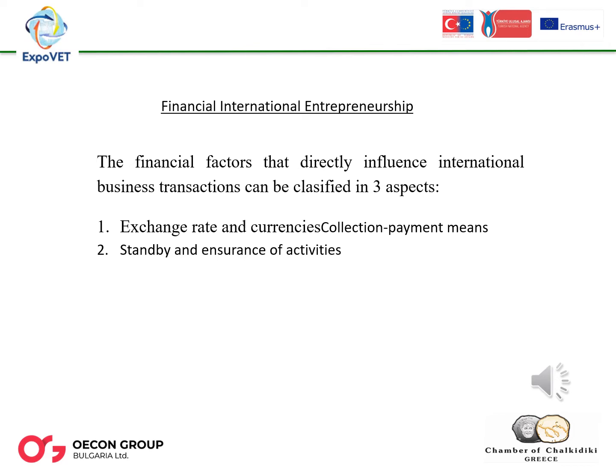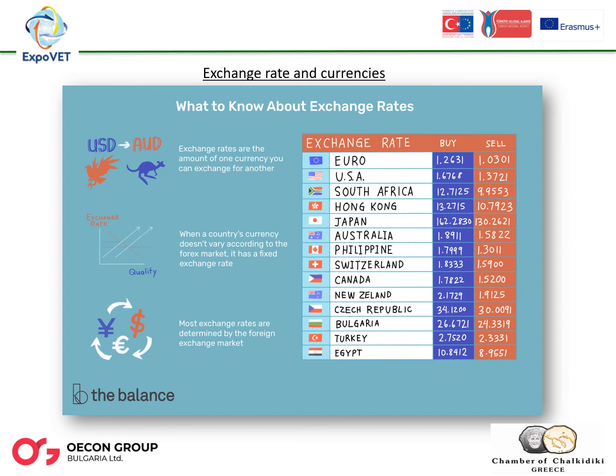This module will provide entrepreneurs with practical information on how to identify the most appropriate payment methods and required credit facilities. In today's complicated and complex societies and economies, there is almost always uncertainty. The entrepreneur must pay attention to every risk that can compromise the profit of a transnational transaction. To do so, he or she should have knowledge of the two most common risks: currency risk and non-payment risk.